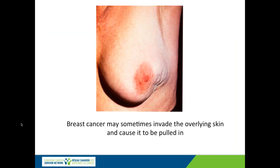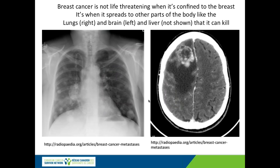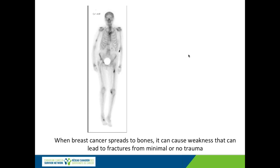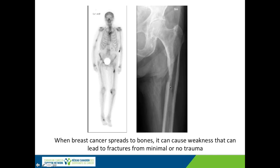Breast cancer isn't always noticed by the presence of a lump. Sometimes it can attach to the overlying skin and pull it in so it looks puckered, like in this picture. Breast cancer is not life-threatening when it's just in the breast. It's when it spreads to other parts of the body, like the lungs or the brain, that it can become lethal. When breast cancer spreads to the bone, it can cause areas of weakness that can fracture easily, even without a fall or an injury. Here's a picture of a bone scan showing a hot spot and an abnormality in the upper thigh. The bone has actually fractured — this is the thigh bone. Sometimes those bones can fracture even just from coughing hard without falling.